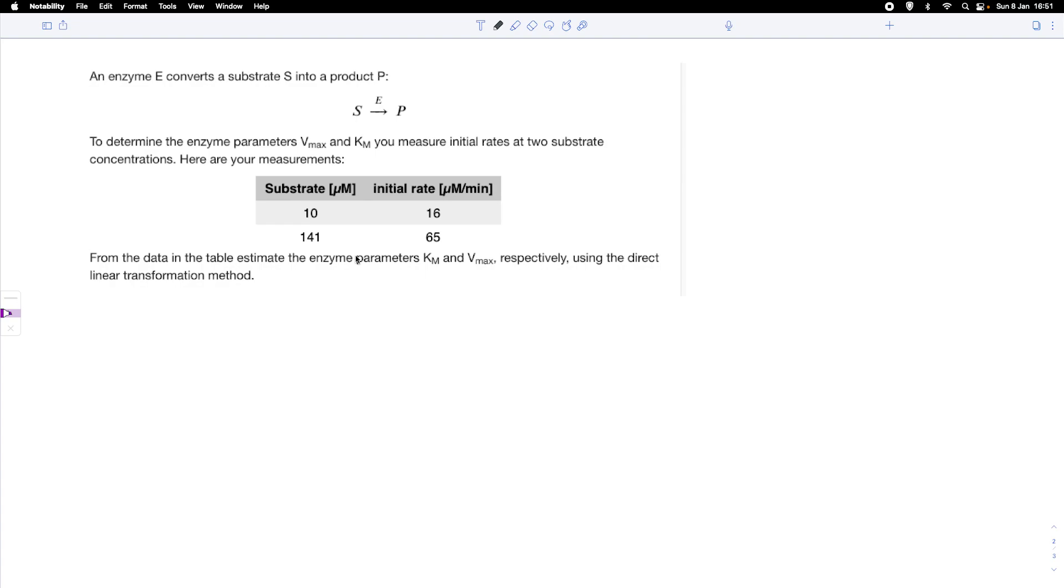So how can we deal with that? First, let's write down the Michaelis-Menten equation. The initial rate equals Vmax times the substrate concentration divided by Km plus the substrate concentration. That is our general Michaelis-Menten equation. We can also do a pure calculation. We have two unknowns, Vmax and Km, but we've got only one equation.